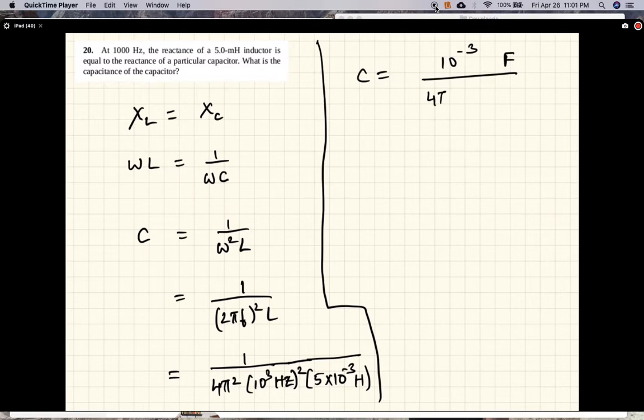And we have 4 pi squared times 5 times 5. So let's see what this works out to.